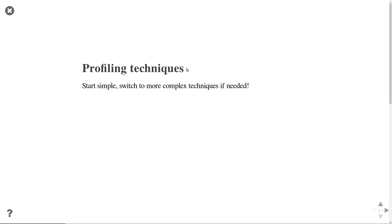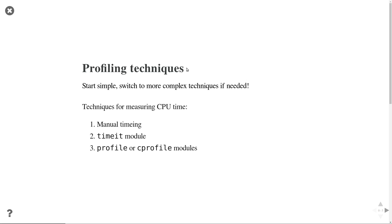Generally, when you profile your program the most important thing is that you start simple — use the simplest techniques first, and if that doesn't solve the issue then use more complex techniques. When we are interested in runtime, we have three typical techniques: manual timing, the timeit module, and the profile and cProfile modules.